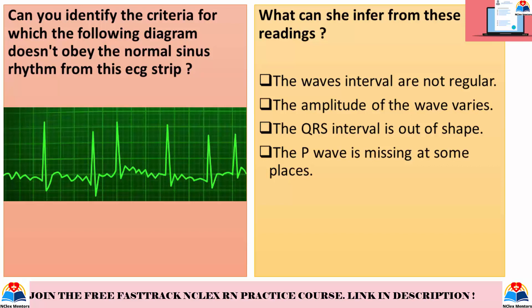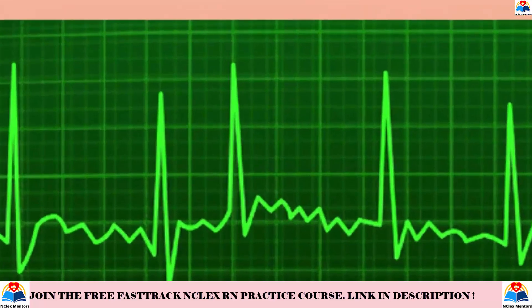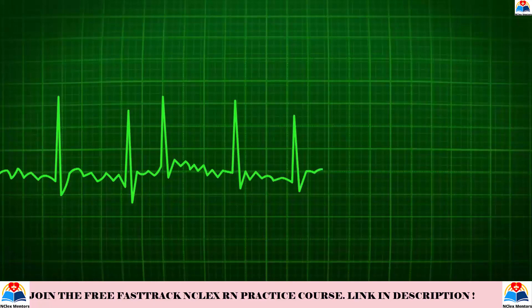Let us go to the next question. Can you identify the criteria for which the following diagram doesn't obey normal sinus rhythm? Options: the wave intervals are not regular; the amplitude of the wave varies; the QRS interval is out of shape; the P-wave is missing at some places. The correct answer is: the intervals are not regular, which is quite obvious from the diagram.